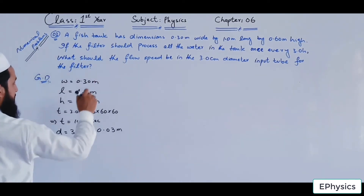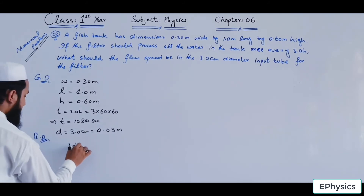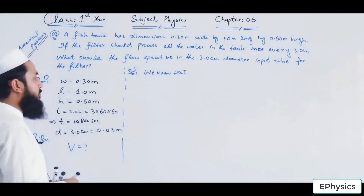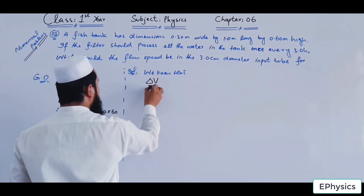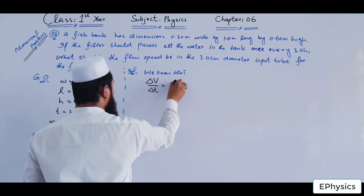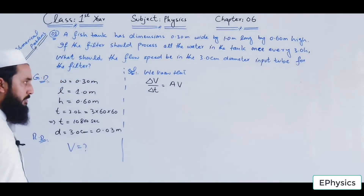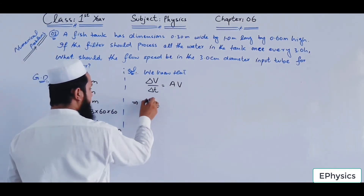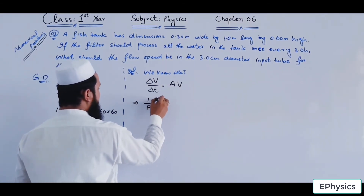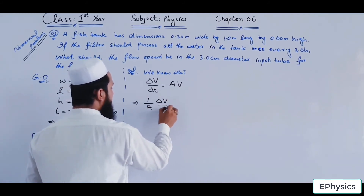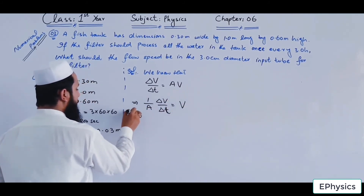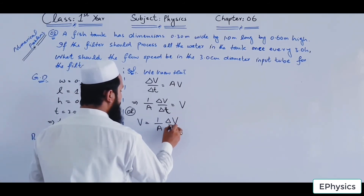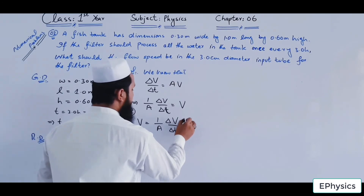We need to find the flow speed. Using the equation of continuity, volume flow rate delta-V divided by delta-T equals A times V, which is constant. Rearranging, speed equals (1 divided by A) times (delta-V divided by delta-T). This is equation number 1. We need to find area A and volume delta-V before substituting.